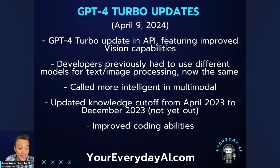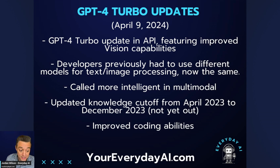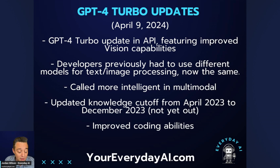It's important to note that the paid version of GPT-4 Turbo was just updated like two days ago, so a lot of new things. The GPT-4 Turbo update in the API features improved vision capabilities. Developers previously had to use different models for text and image processing — now they can use the same. People have said there are much more intelligent multimodal capabilities. Also a big one: the knowledge cutoff is being updated from April 2023 to December 2023, and there are also improved coding abilities.